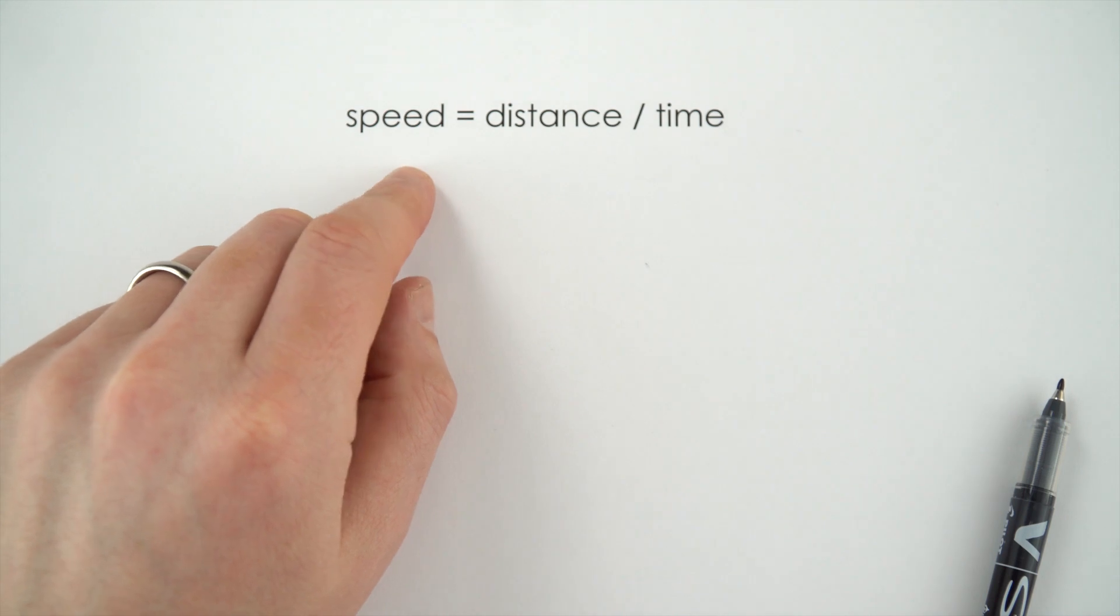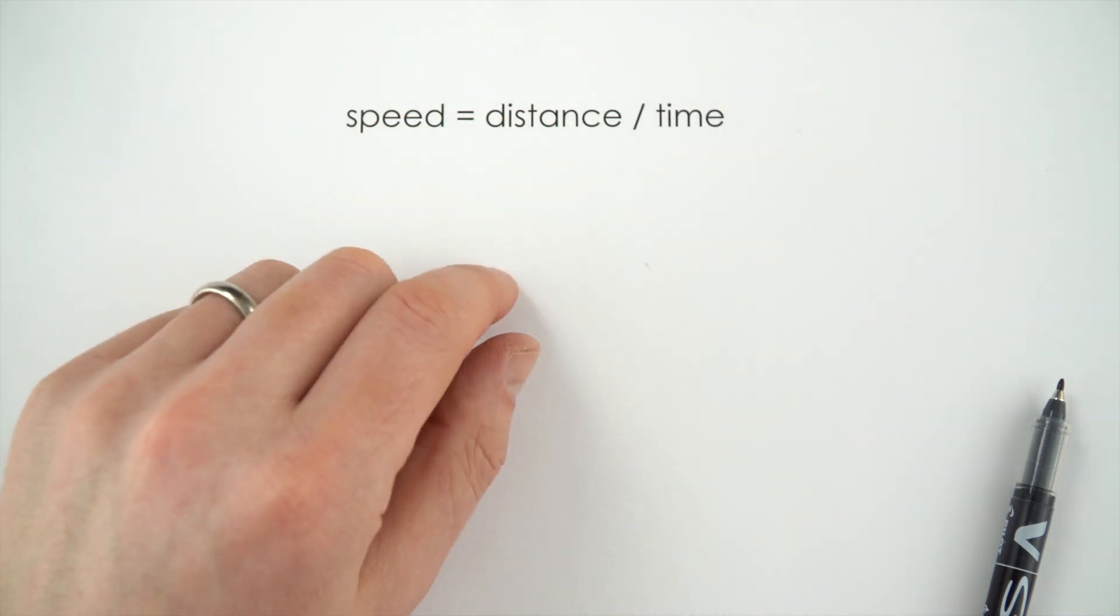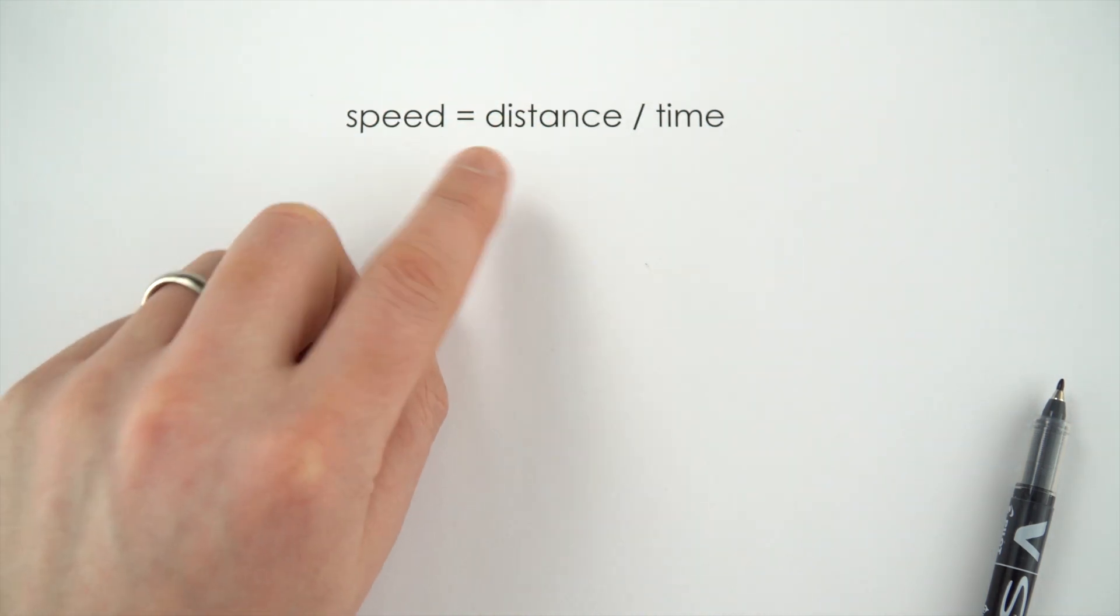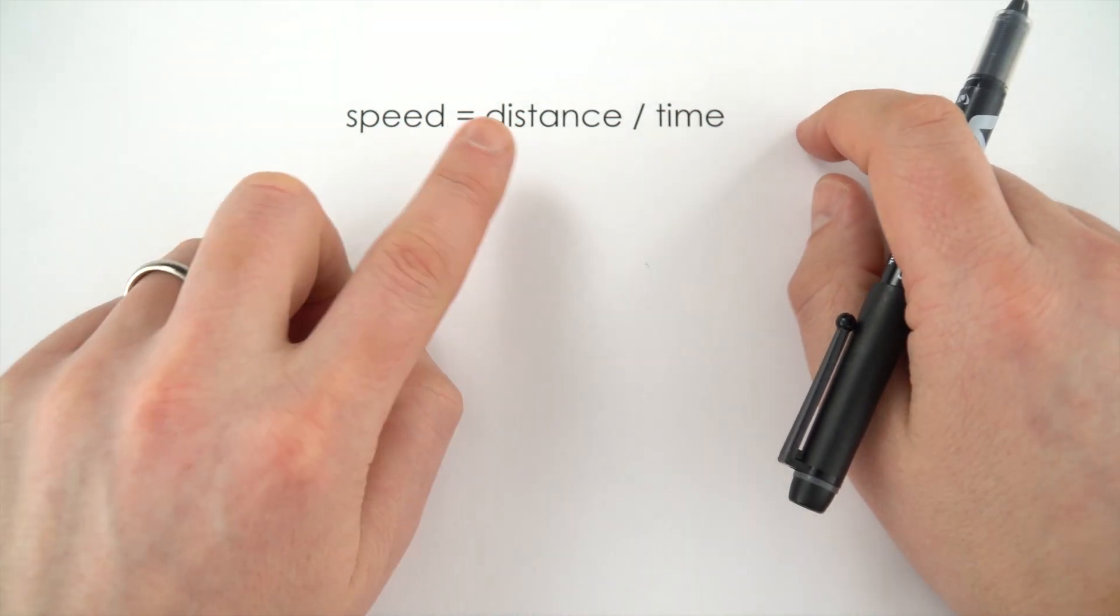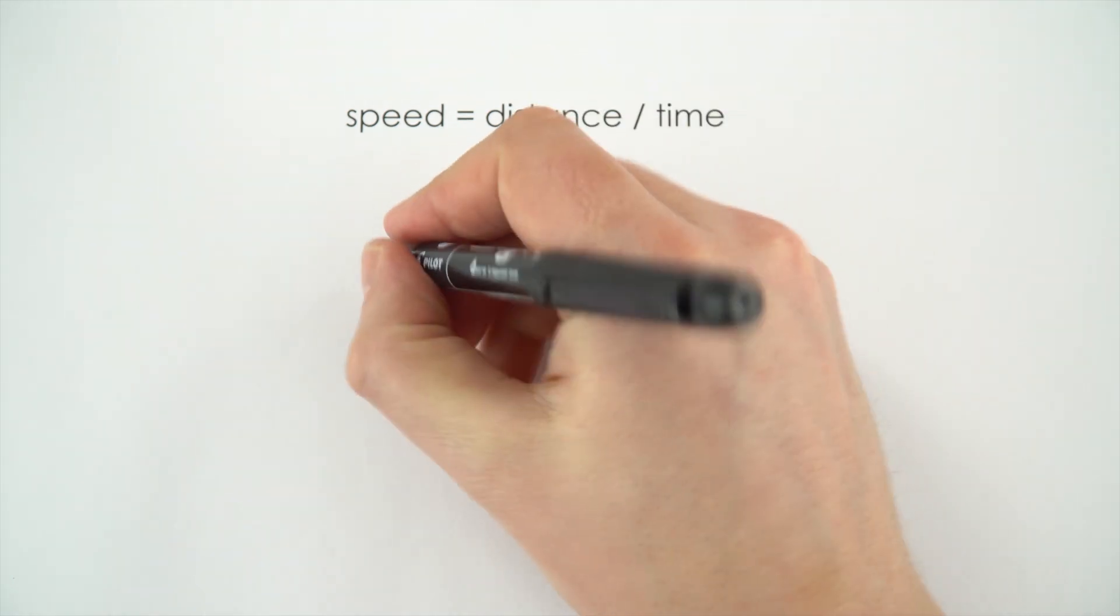Now this is a very simple, straightforward equation from physics. You probably know it already, I hope you do, that speed is equal to distance divided by time. Now all of these things here can be measured and given a number, and that's what we call a quantity.